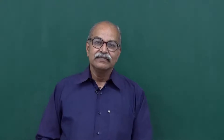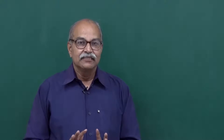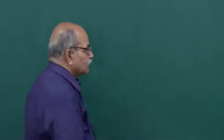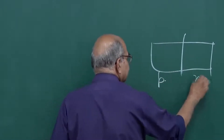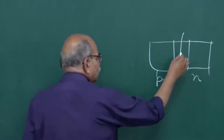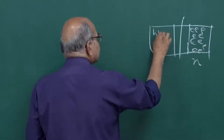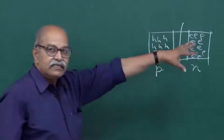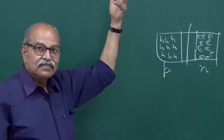We talked about p-n junctions and how diffusion takes place in a semiconductor p-n junction. Suppose this is your p-n junction - this is the p side, this is the n side. You have a depletion region, and then you have many electrons here and many holes here, and we discussed how these holes and electrons are distributed in different quantum states of different energies.